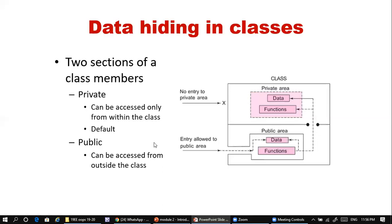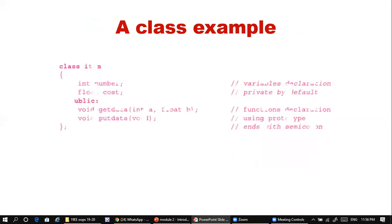In summary: classes have two sections — data members and member functions — and two access specifiers: private and public. Now for a simple class example: 'class item' — where 'class' is the construct and 'item' is the user-defined name of the class.